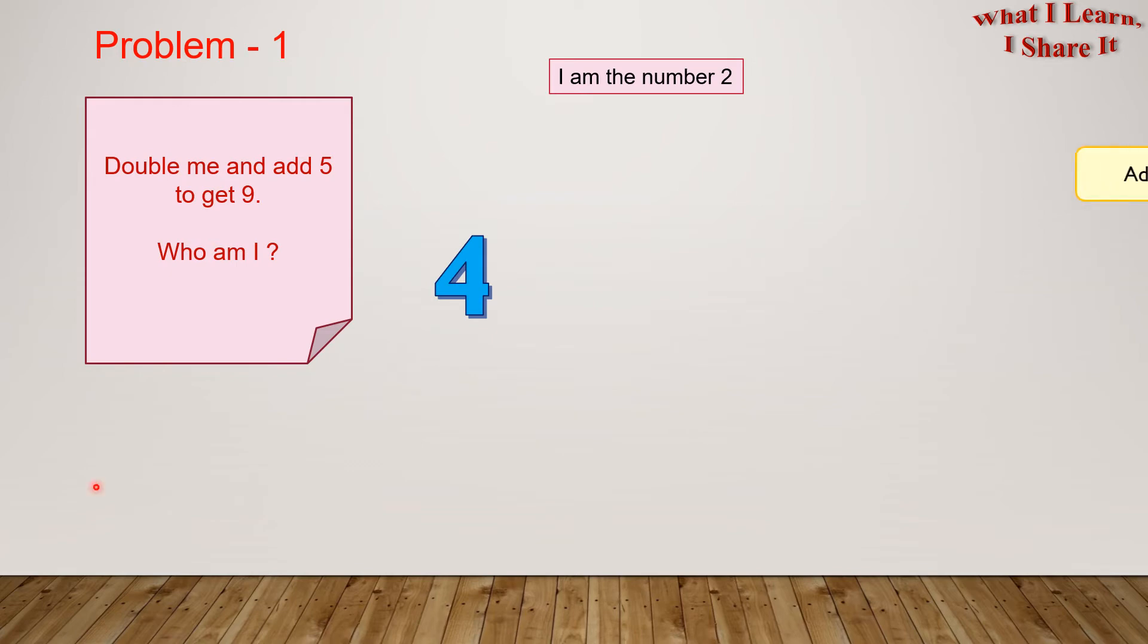Here we have 4. And the next clue is add 5. We have to do 4 plus 5 equals 9. And this means our answer is correct.